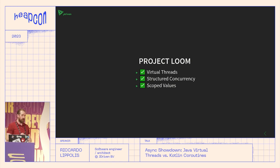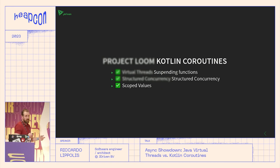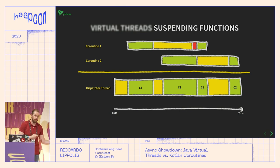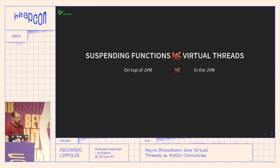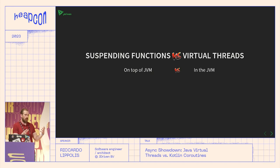Those familiar with Kotlin coroutines might think: we already have suspending functions, structured concurrency, and coroutine context. Suspending functions work on the same principle — instead of virtual thread one and two, you have coroutine one and two running on a dispatcher thread. But there are differences: suspending functions are built on top of the JVM because the Kotlin compiler transforms your suspending function at compile time, which is why it's difficult to call a suspend function from Java. Virtual threads are a JVM implementation with no source code mangling.